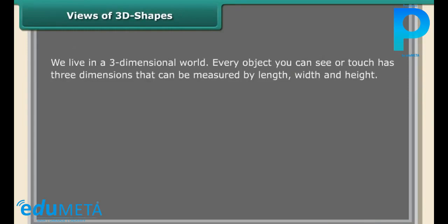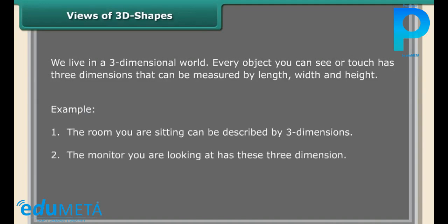Every object you can see or touch has three dimensions that can be measured by length, width, and height. Example one: the room you are sitting in can be described by three dimensions. The monitor you are looking at has three dimensions.